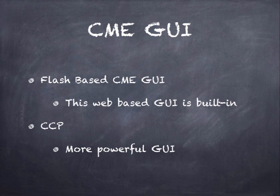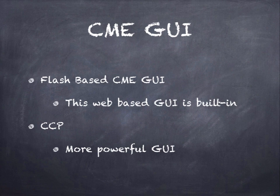Let's talk about the CME GUI. We've discussed this in a prior chapter. We had a lab to set up the flash-based CME GUI — it's terrible, limited, and there's no point to using it. Everything you could do with the CME GUI is done better through CCP, which has far more capabilities. Cisco hasn't updated the flash-based CME GUI in many years — it's outdated and broken. All recent effort has gone into Cisco Configuration Professional, which I recommend as the GUI tool for configuring Call Manager Express.